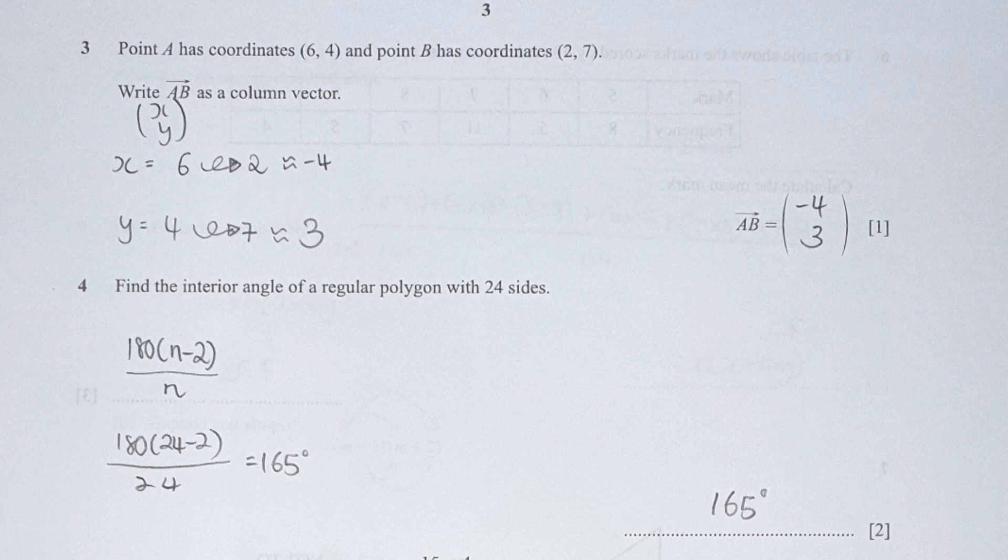For question 3, they're looking for column vector of A to B. From A, the x moves from 6 to 2, so the difference is negative 4. For the y part, it moves from 4 to 7, so the difference is 3. I list down the column vector: negative 4 at the top representing changes in x, and 3 at the bottom representing changes in y.